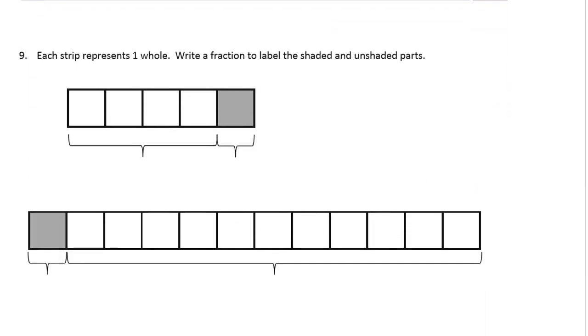Here we are. Each strip represents one whole. Write a fraction to label the shaded and unshaded parts. I'm going to count how many equal parts there are. 1, 2, 3, 4, 5. There's 5 equal parts, so we're talking about fifths. Each one of these is—I know it doesn't say to do this, but I'm going to do it anyway. Each one of these is a fifth. So what's shaded in is 1 fifth.